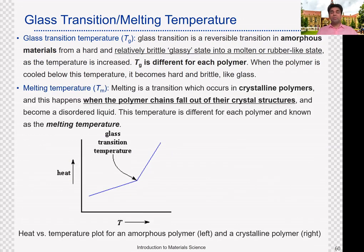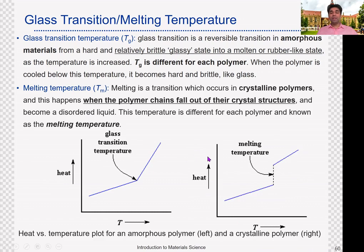The other type is crystalline materials or crystalline polymers. Crystalline materials have an ordered structure, so when we add heat or energy, they behave differently. As we add heat, the temperature increases and the chains start to fall out of the crystalline structure. Initially it is a solid, and then as we add heat, we turn it into a molten material.